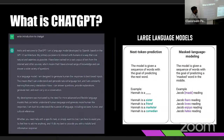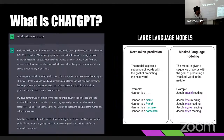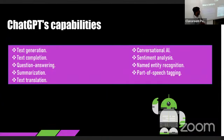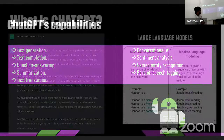ChatGPT is basically a language model which was developed by OpenAI in 2019. ChatGPT is a combination of machine learning and natural language processing. NLP is used to understand and parse the sentences, and machine learning is used to give the response. It is the largest language model to date and it is trained on more than 175 billion parameters.